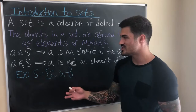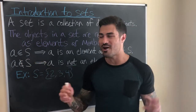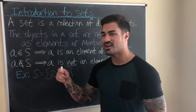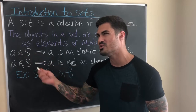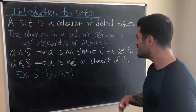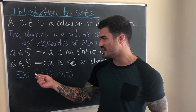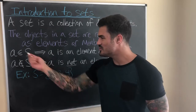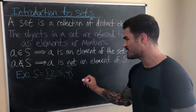That brings us to notation. We read 'a ∈ S' out loud as 'a is an element of the set S,' or 'a is a member of the set S,' or 'a belongs to the set S.' To say a is not an element of set S, we draw a line through that notation. Let me go to this example to show how we write it.